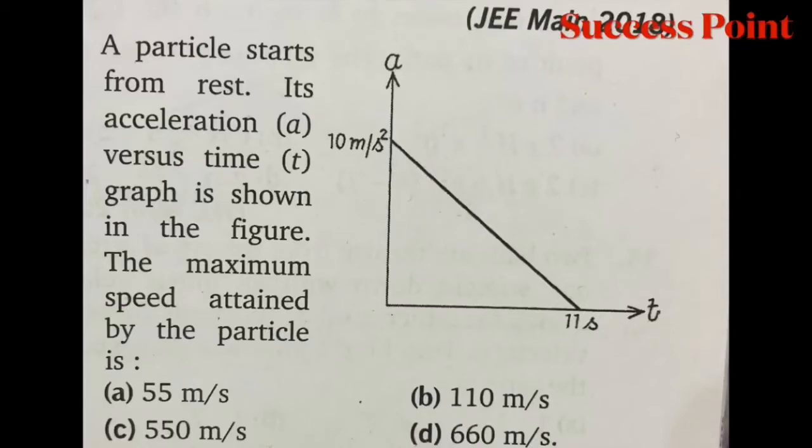A particle starts from rest. Its acceleration (a) versus time (t) graph is shown in the figure. The maximum speed attained by the particle is: (a) 55 m/s, (b) 110 m/s, (c) 550 m/s, (d) 660 m/s.